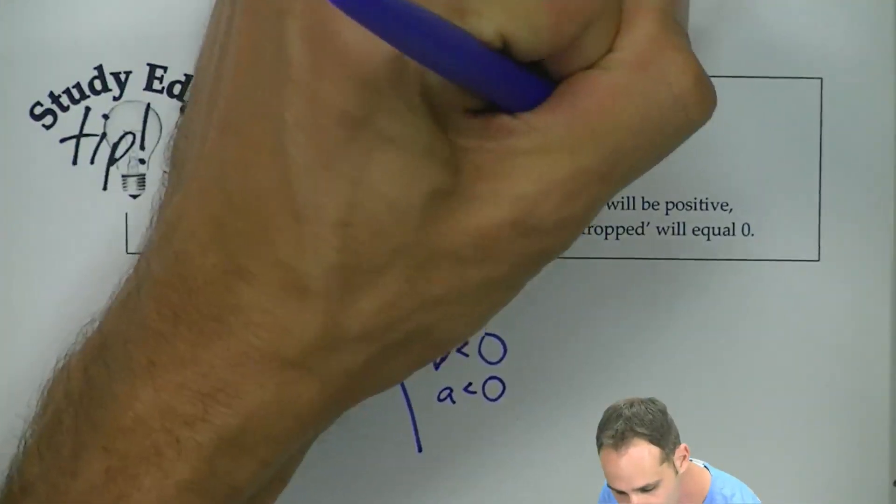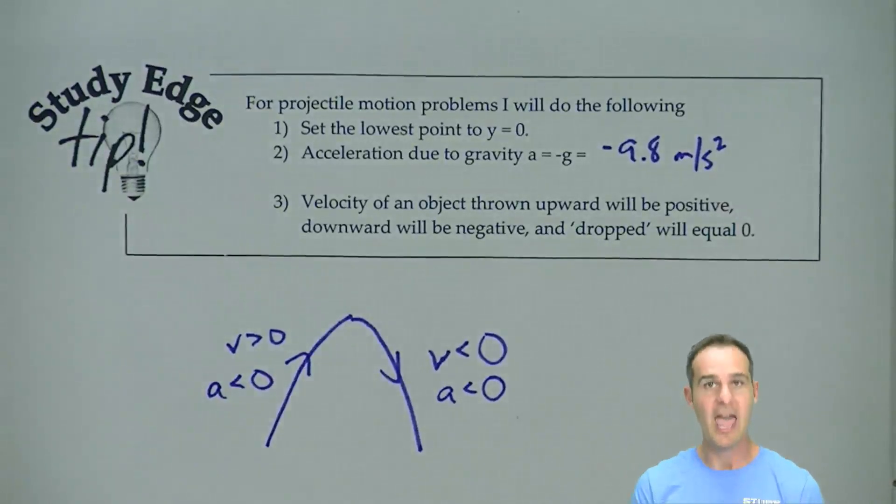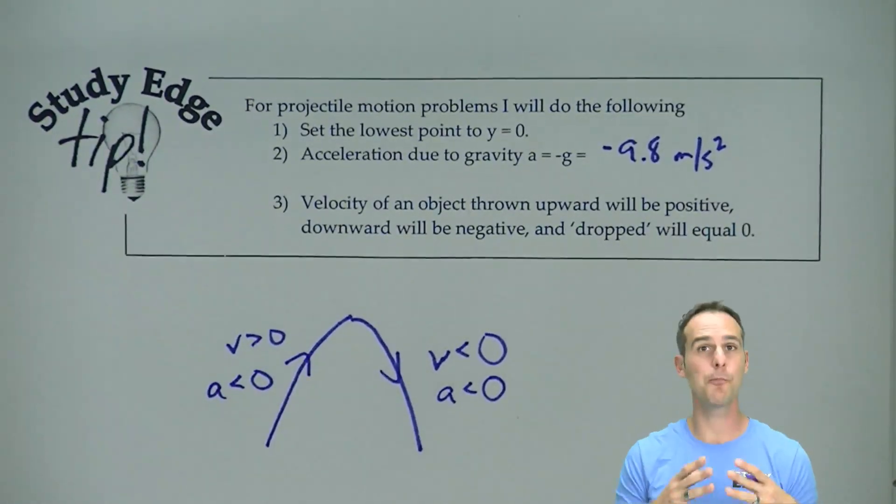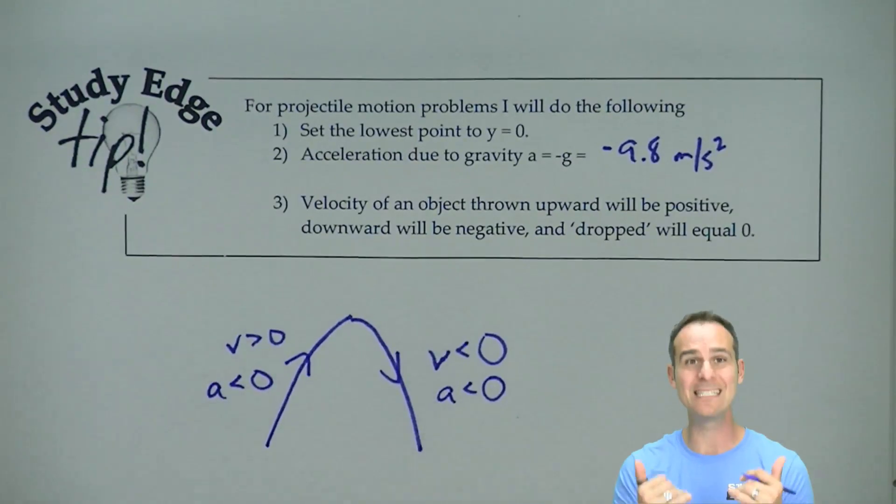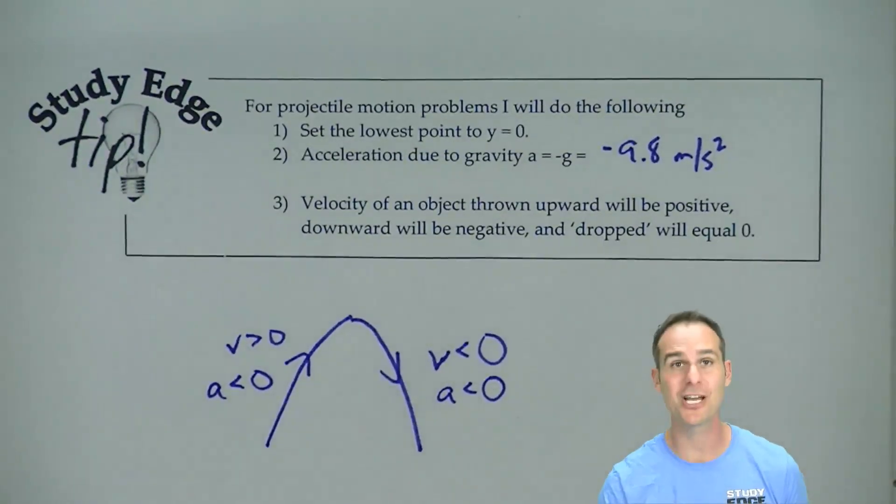Typically, g is 9.8, so acceleration is going to be negative 9.8 meters per second squared. And that's what you need to understand is the gravitational pull from the Earth is going to be pulling it down, and that is why A is negative when you're working out problems like this for projectile motion.